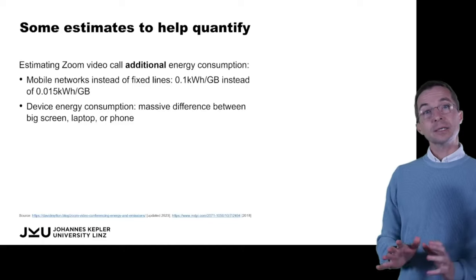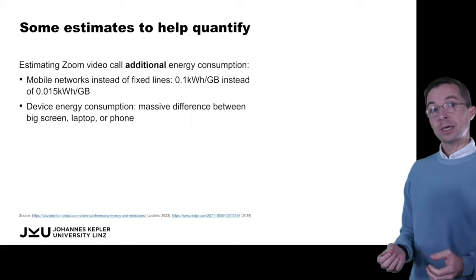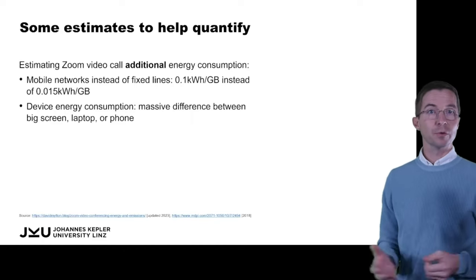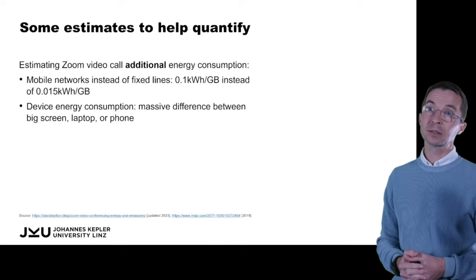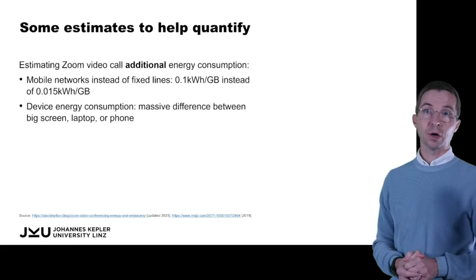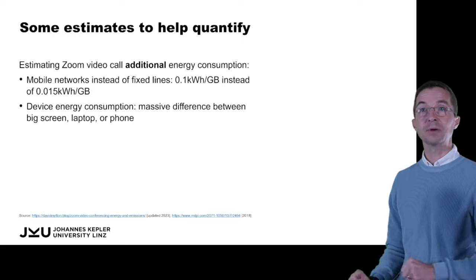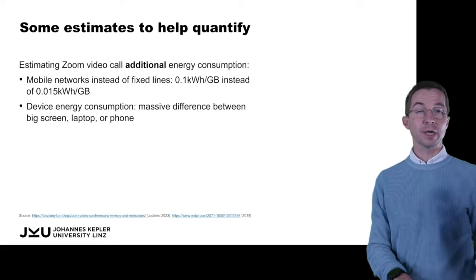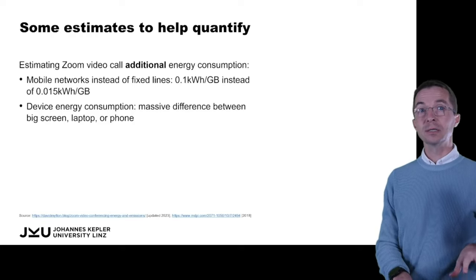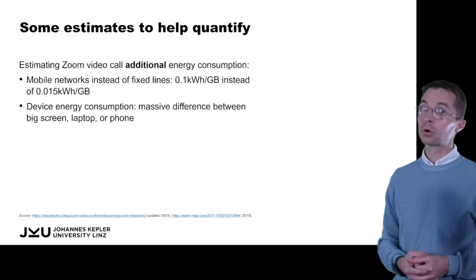If we don't take wired connections but use mobile cellular network connections, estimates go to a factor of seven to ten above wired network transfer costs per gigabyte. We're still talking only about the network transfer — not the server side or client devices yet. For network transfer, it matters a lot what the medium is: fiber or other cables are significantly more energy efficient than sending data through a mobile network over kilometers of distance.